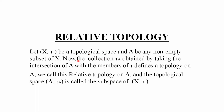مطلب ہمیں ایک main topological space X given ہے اور ایک subset بھی given ہے X کا۔ جب ہم اس subset کے ساتھ collection کے تمام members کا intersection لیتے ہیں، تو جو class بنتی ہے وہ relative topology ہوتی ہے۔ اور (A, τ_A) کو subspace of X کہتے ہیں۔ اب ایک example سے اسے مزید clear کرتے ہیں۔